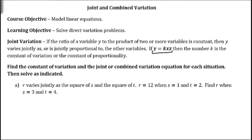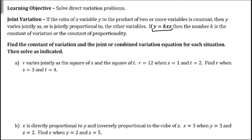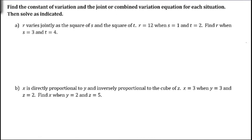In combined variation, you could have direct variation, you could have inverse variation, it could be that you have the square root of some variables or the square of other variables or the cube, and we're putting both of those together. In the first couple of problems, it's not really word problems — they're just given to us directly.